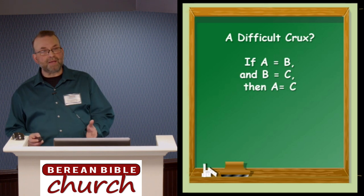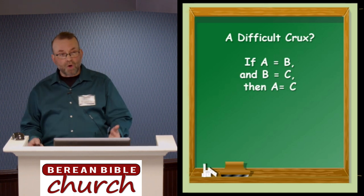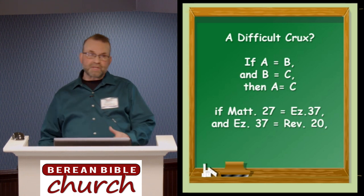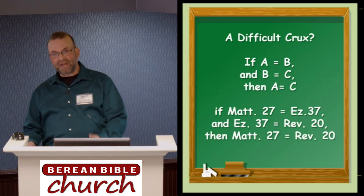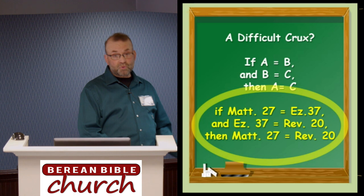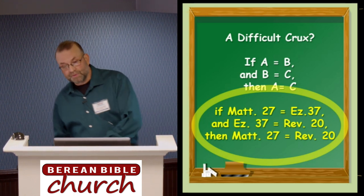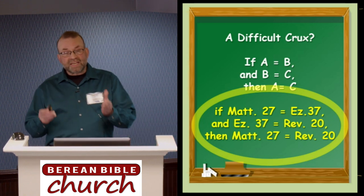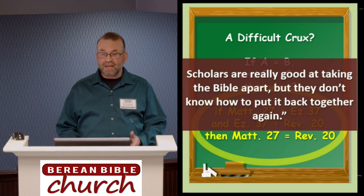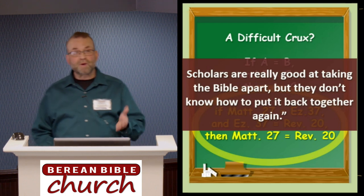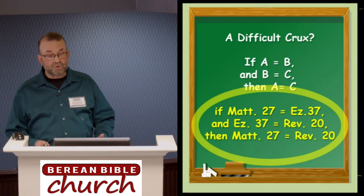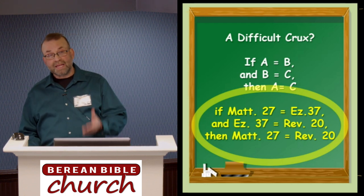Just think about it: if A equals B and B equals C, then A also equals C. Consequently, if Matthew 27 equals Ezekiel 37 and Ezekiel 37 equals Revelation 20, then Matthew 27 equals Revelation 20. The same academic community that sees the connection between Matthew 27 and Ezekiel 37 on one hand, and Ezekiel 37 and Revelation 20 on the other, seems to miss what happens when we put two and two together. As they say, scholars are really good at taking the Bible apart, but they don't know how to put it back together again. Matthew and John are both painting the same picture, and the first resurrection of Revelation 20 is the resurrection of the saints coming out of their tombs in Matthew 27.